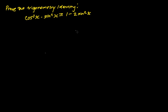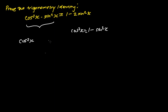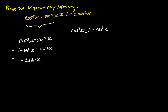We know that cosine squared x equals 1 minus sine squared x. We can apply this trigonometry identity into the first part of the equation: cosine squared x minus sine squared x equals, substituting cosine squared x as 1 minus sine squared x, minus sine squared x, which gives us 1 minus 2 sine squared x — the same as the right-hand side of the equation.